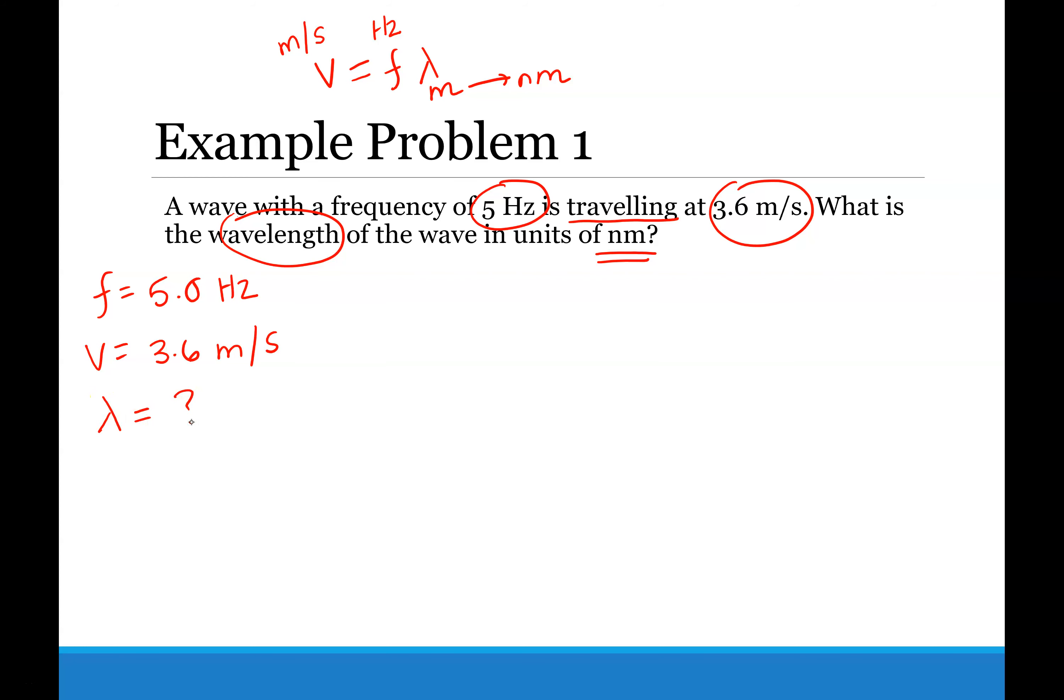So everything is in its correct units. Frequency is in hertz, velocity is in meters per second. So we can just put this into our equation: 3.6 meters per second equals 5.0 Hz times x. Or if you want to put the little upside down y for wavelength, you can. I think it's called a lambda.